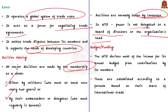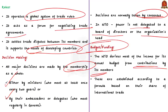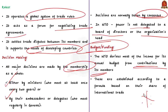Regarding the funding of WTO — contributions by member countries are a major source of income. These contributions form a major part of its annual budget and are established according to a formula based on each country's share of international trade. In this discussion, we saw about WTO, its origin, its predecessor GATT, India's role in WTO, the many roles of WTO, its decision-making process, and its funding.